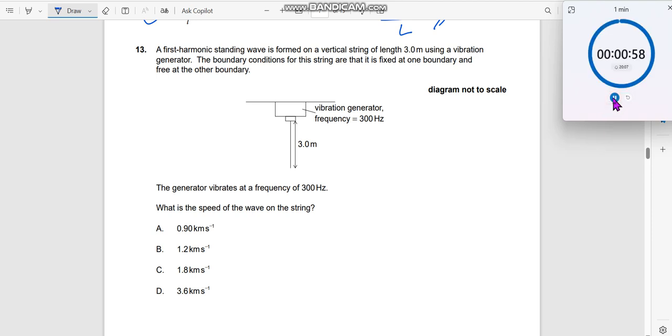Question number 13: A first harmonic standing wave is formed in a vertical string of length 3 meters using a vibration generator. The boundary conditions for the string are: it is fixed at one boundary, which means it's a node here, and free at the other boundary, which means here it is an anti-node.